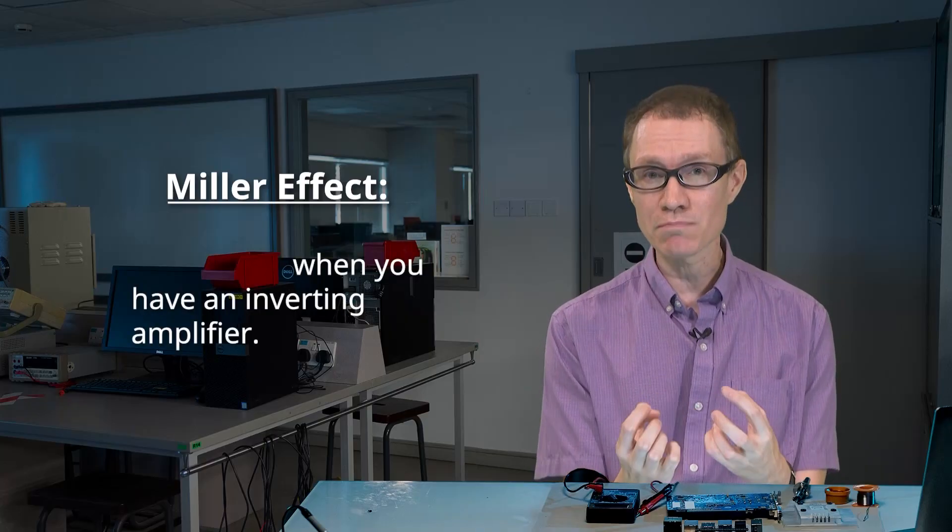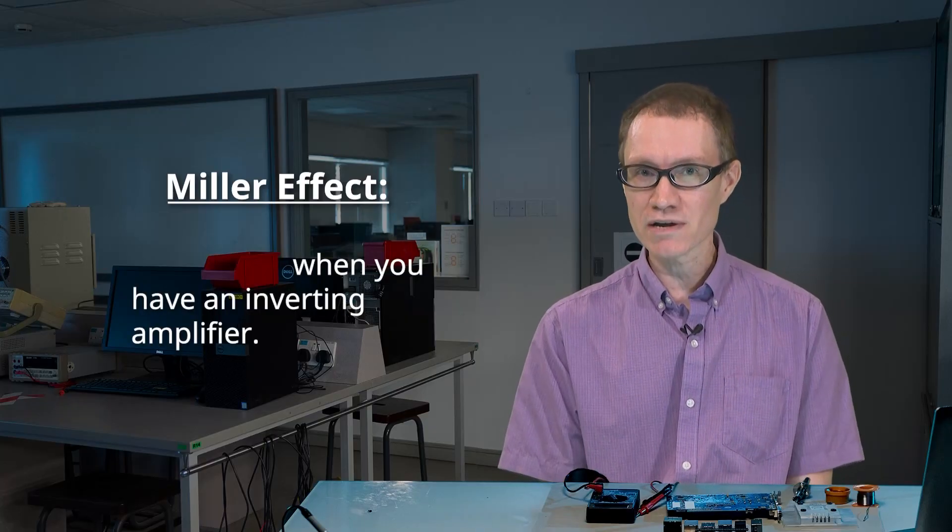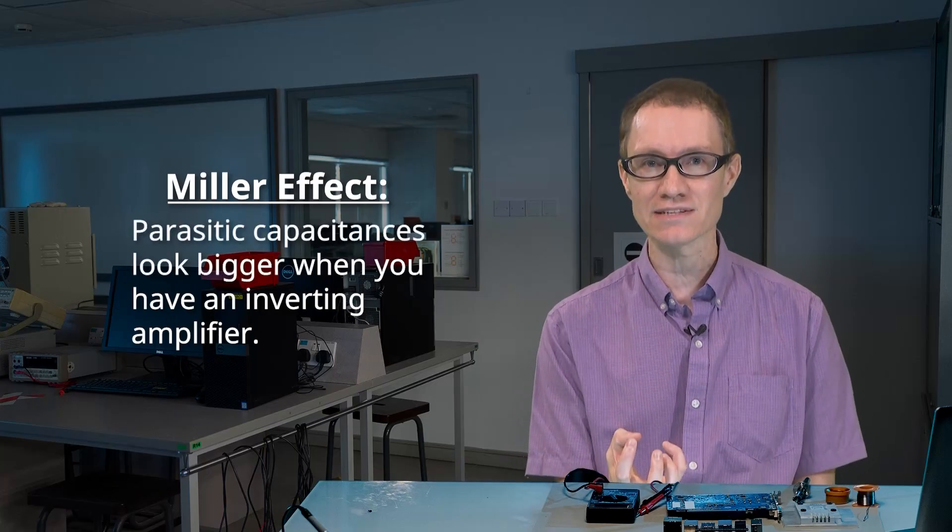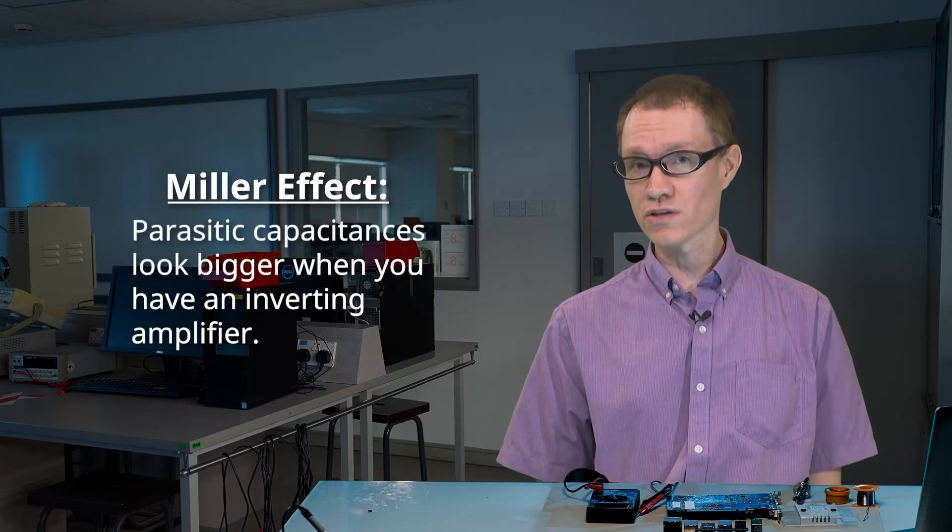Basically, the Miller Effect says that if you have an inverting amplifier, then it makes these parasitics worse. It makes the parasitic capacitances larger than what they would otherwise be.